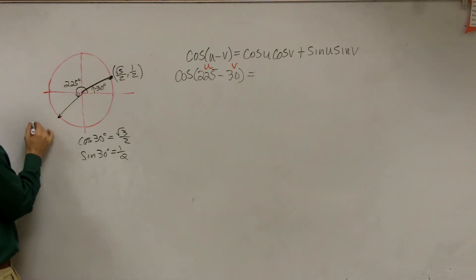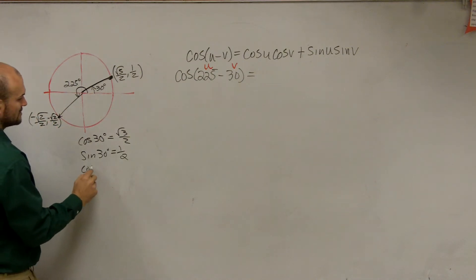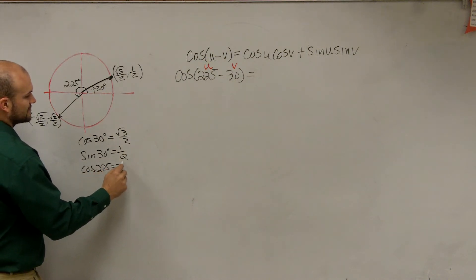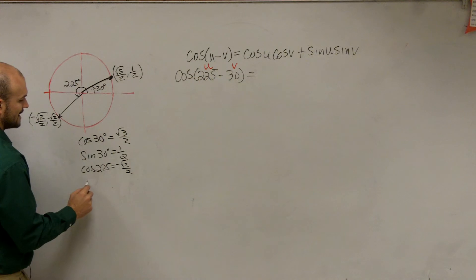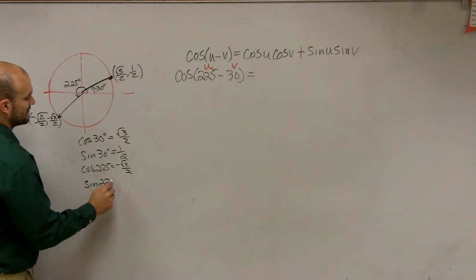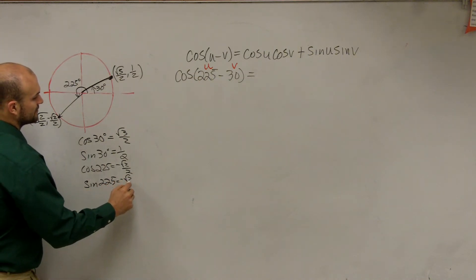Well, the coordinate point there is negative square root of 2 over 2 comma negative square root of 2 over 2. So therefore, you can say the cosine of 225 degrees is equal to negative square root of 2 over 2. And the sine of 225 degrees is equal to negative square root of 2 over 2.